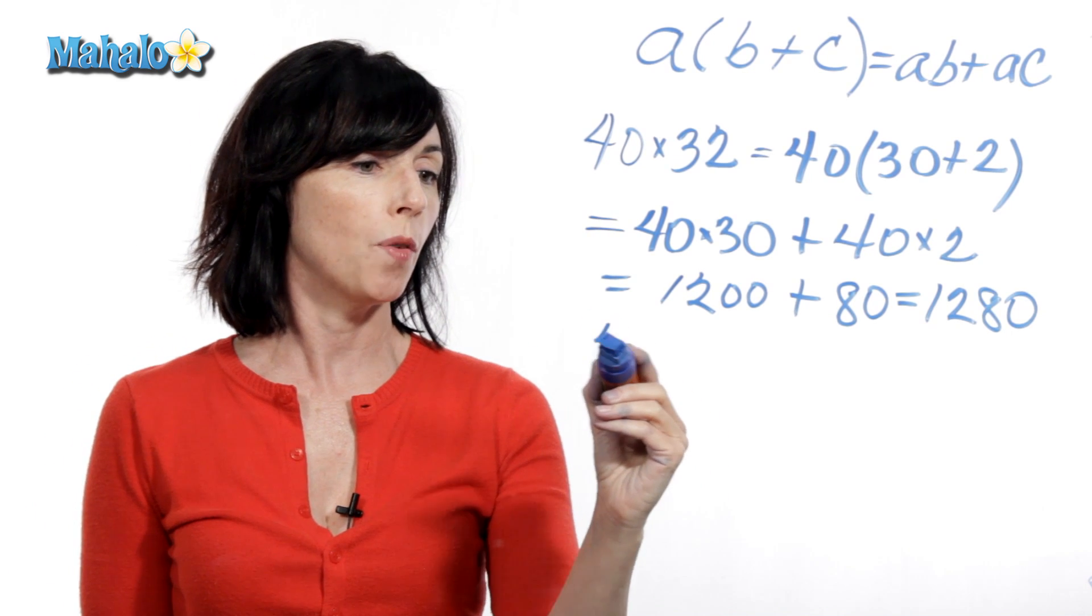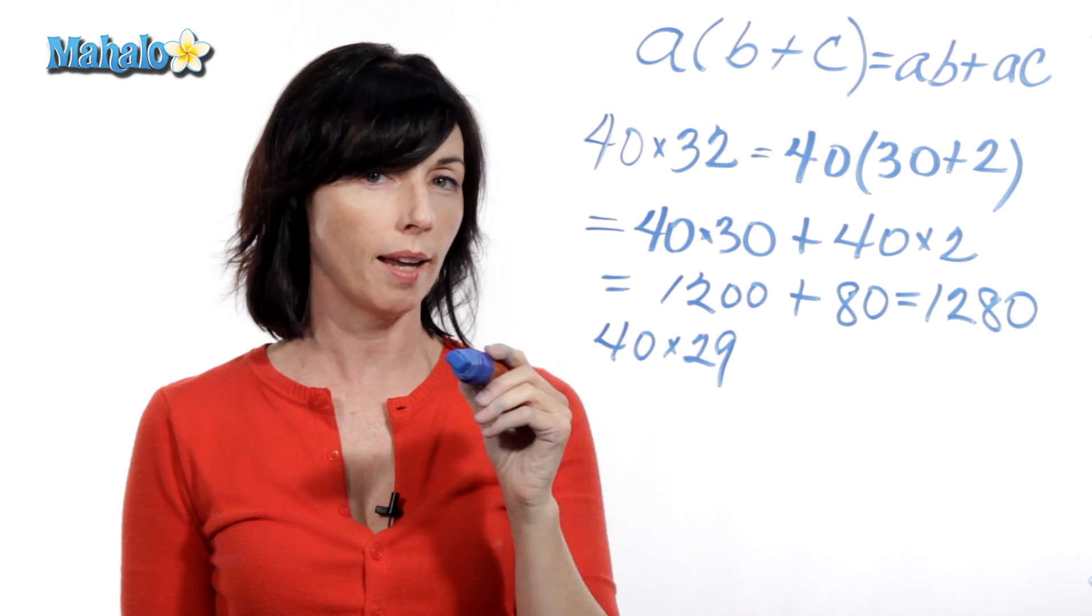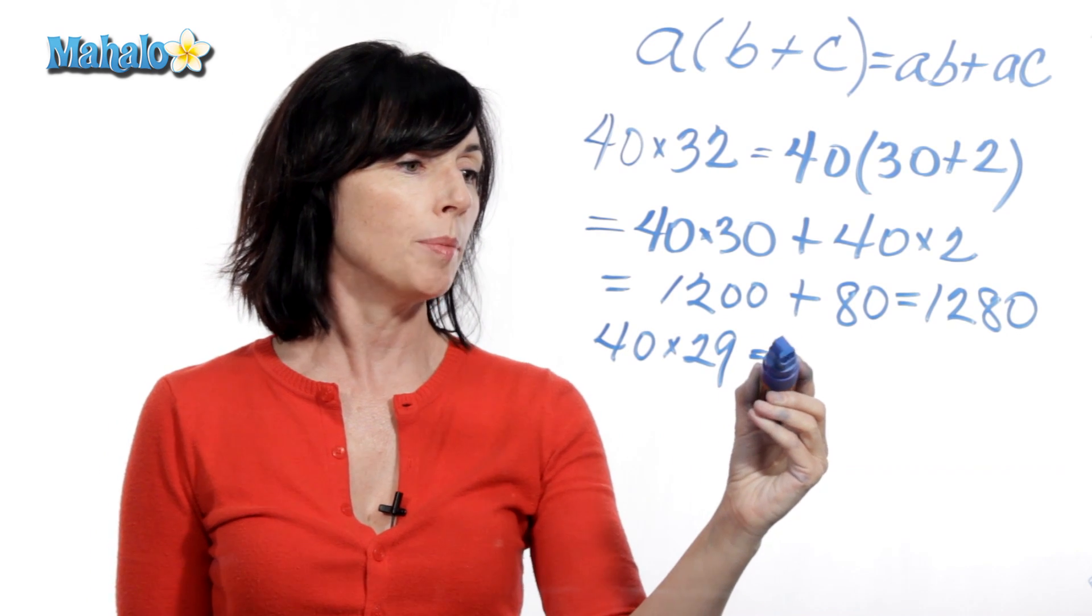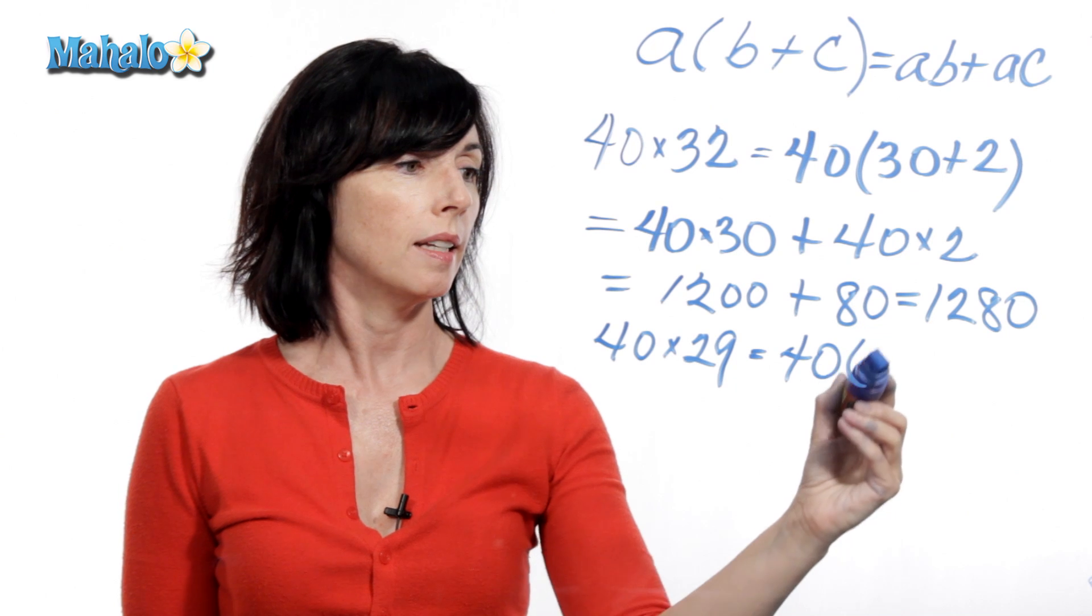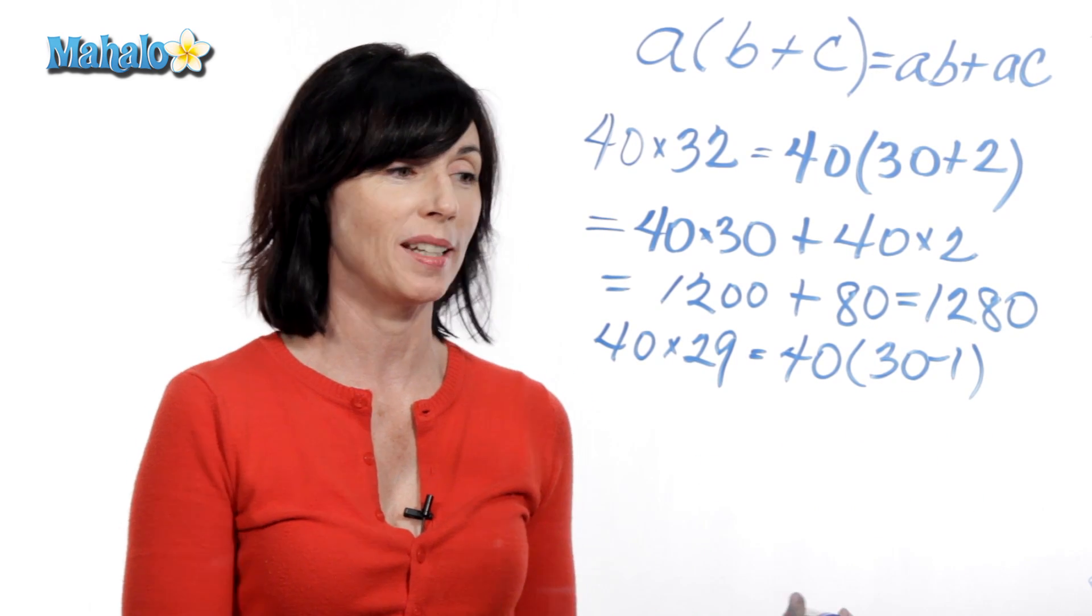Suppose we have 40 times 29. That doesn't really look too appealing, but I can make it easier. I'm going to rewrite 29 as 30 minus 1. And now, I'm going to use the distributive property again.